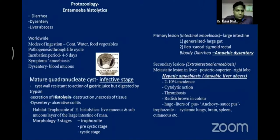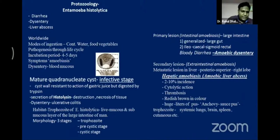Infection occurs through contaminated food or water. When consumed, the cyst produces eight small amoebulae — daughter cells — and these daughter cells in their motile state are called trophozoites. During the life cycle of the trophozoite, it secretes histolysins, which cause destruction and necrosis of tissues of various organs — mostly the intestine and liver.